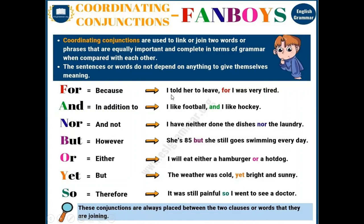For example: 'I told her to leave, for I was very tired.' These are two clauses connected with the conjunction 'for'. Similarly, 'I like football and I like hockey' — these two clauses are connected with 'and'. You can read other sentences as examples.